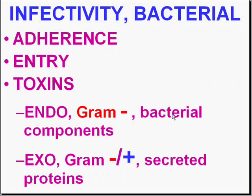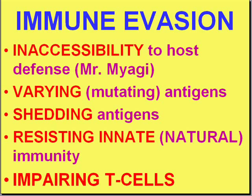If that toxin is actually part of or a breakdown product of the bacteria itself, it's called an endotoxin. This is almost exclusively the result of gram-negative bacteria, though there is some argument it may be present in some gram-positives like staph. Exotoxins are toxins that do not result from bacterial components but are simply secretions of bacteria, and can be seen in both gram-positive and gram-negative bacteria.